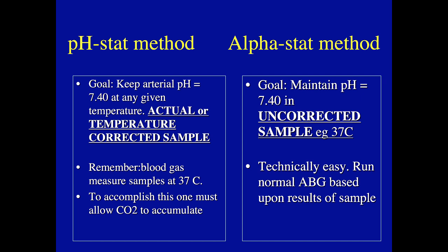The alpha stat method maintains pH in an uncorrected sample — it's technically easy. Run your normal ABGs based on the results of the sample. You respond exactly the same way on bypass: if the CO2 is high or low, you adjust your sweep accordingly.